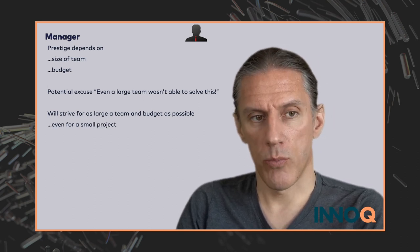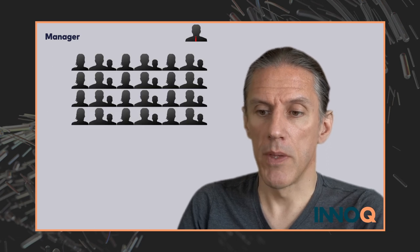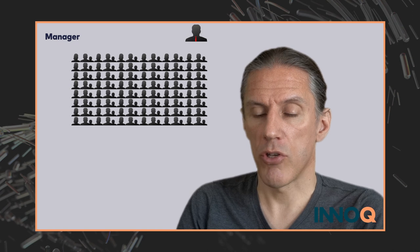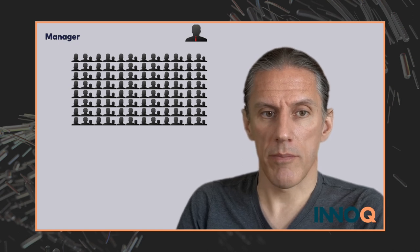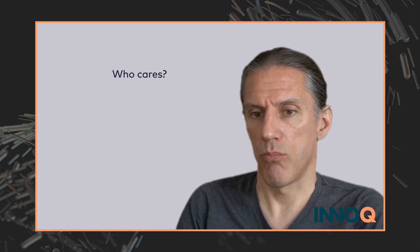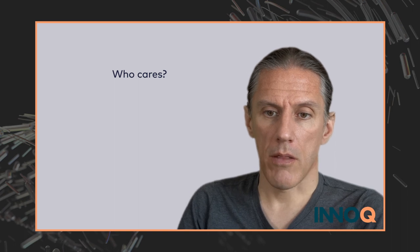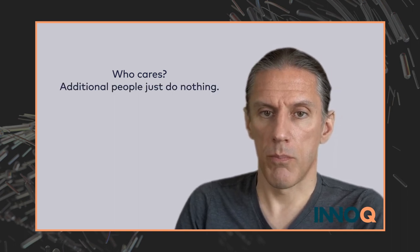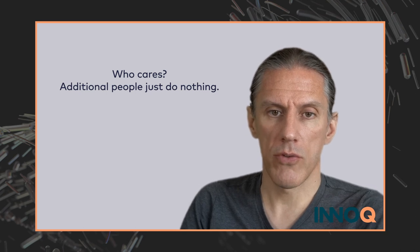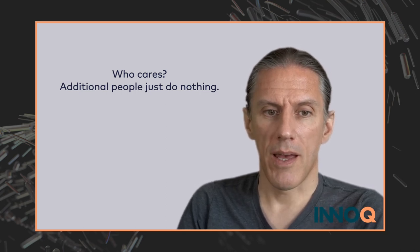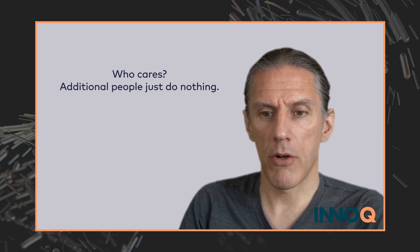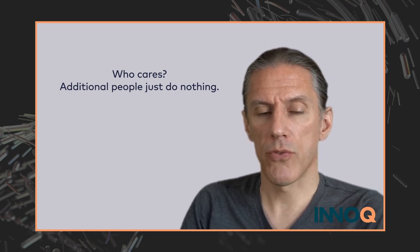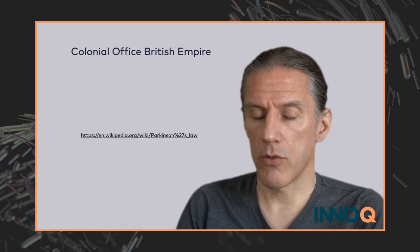If you have such a team, the manager will aim for an even larger team. Now you could say: why would I care? I'm a technical person, and those additional people would just do nothing — they'd be sitting somewhere costing some money, but I don't necessarily care. However, that's wrong, because there is a law called Parkinson's Law, which is also something Conway references in his paper.